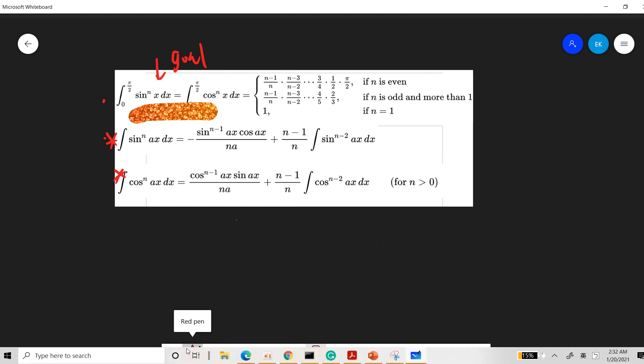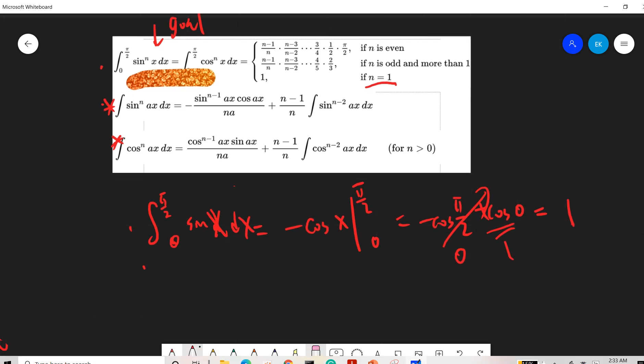Let's prove one by one. We start from n equals 1. If n equals 1, this is negative cosine x evaluated from 0 to pi over 2, so it's negative cosine pi over 2 plus cosine 0, which is 0 plus 1, so it's 1.